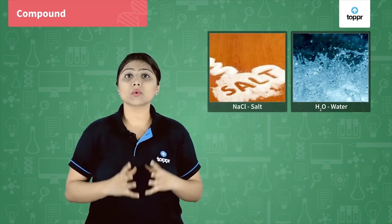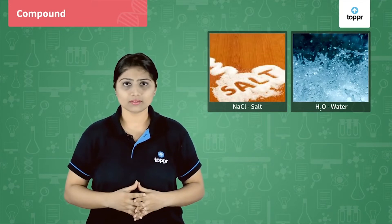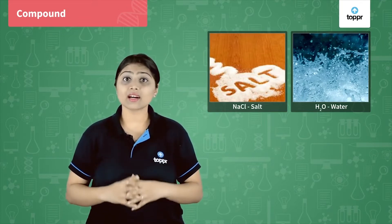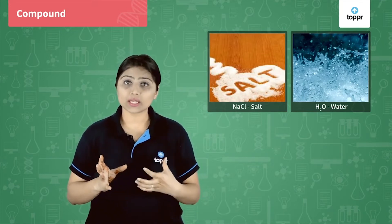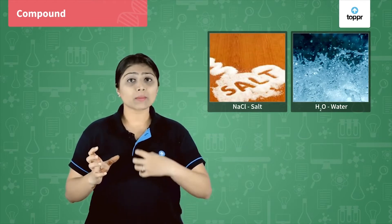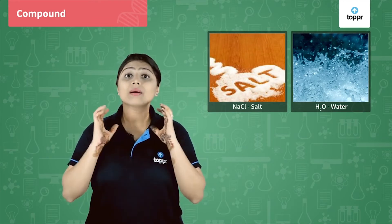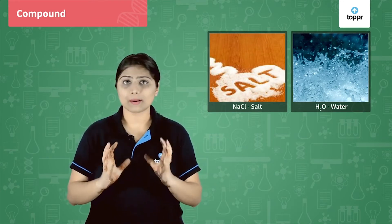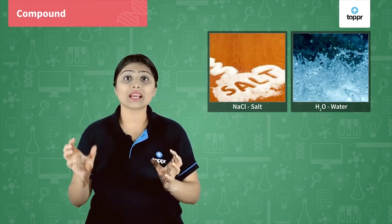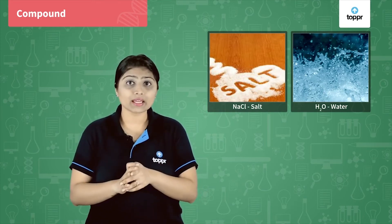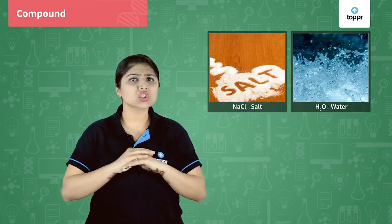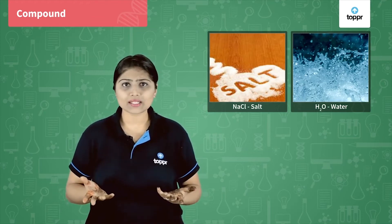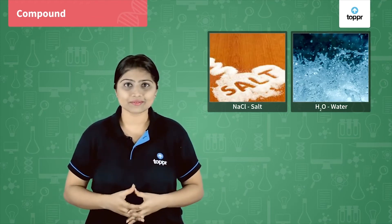Let's take one more example: sodium chloride, the common salt. It is again a compound. It is made up of sodium and chlorine. Both sodium and chlorine are poisonous elements, but when they combine chemically, they lose their properties and sodium chloride is formed, which is not at all poisonous. We eat common salt daily.